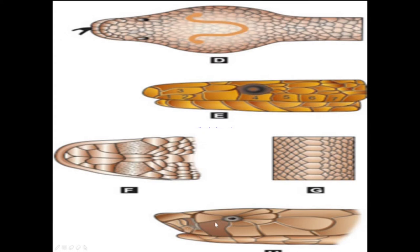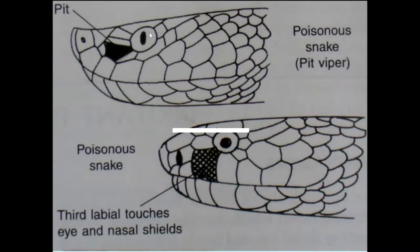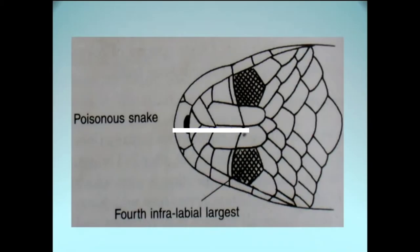The third labial fold touches the nostril and eyelids in cases of poisonous snakes, whereas this does not occur in non-poisonous snakes. Head scales are small in poisonous snakes and large in non-poisonous snakes. The central row of belly scales — enlarged in poisonous snakes — is also shown here. There is also a pit visible in some poisonous species, and the third labial touches the nostril and the eye. This picture is also given in your book.